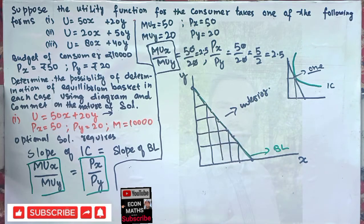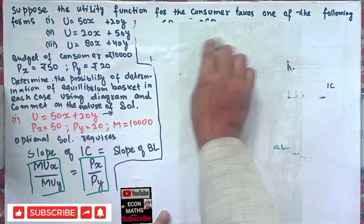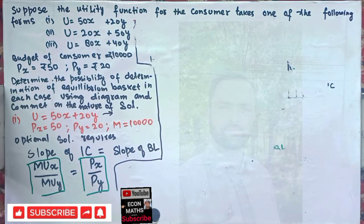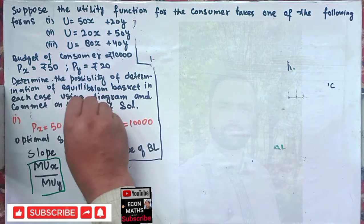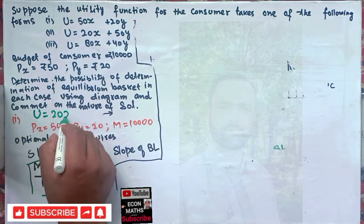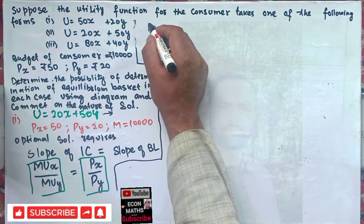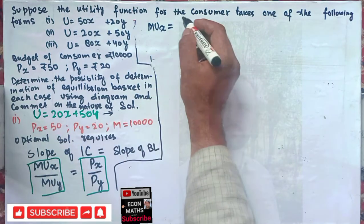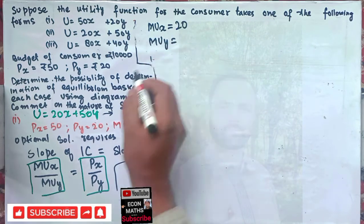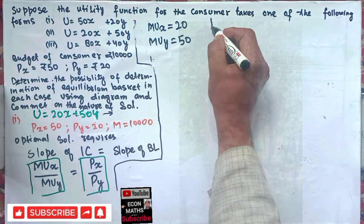Now moving to the next utility function: U = 20x + 50y. Using the same tangency condition, marginal utility of x, differentiating with respect to x, gives MUx = 20. Marginal utility of y, differentiating with respect to y, gives MUy = 50.